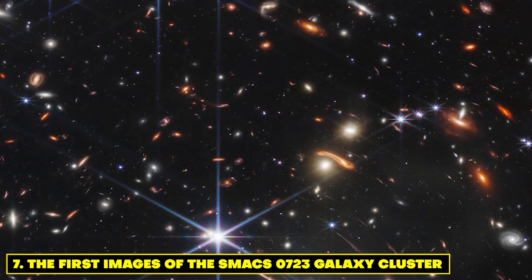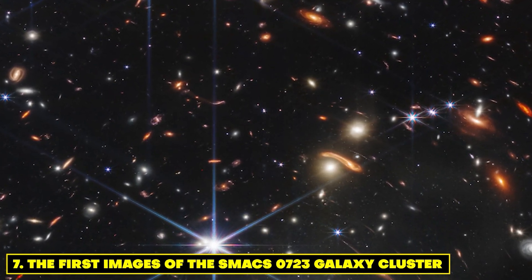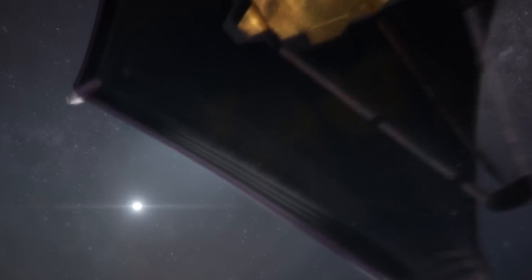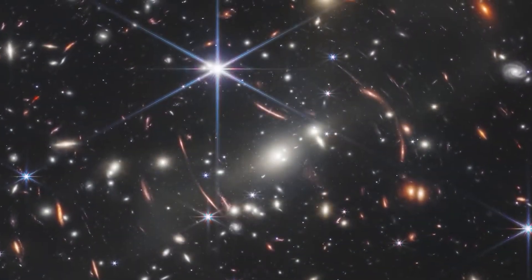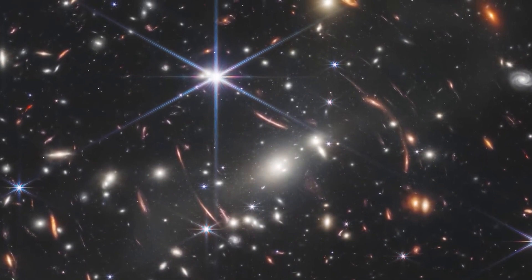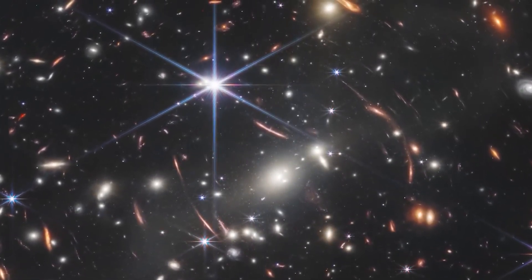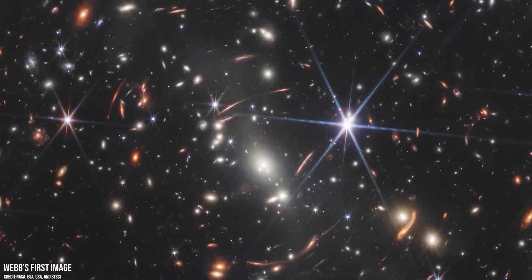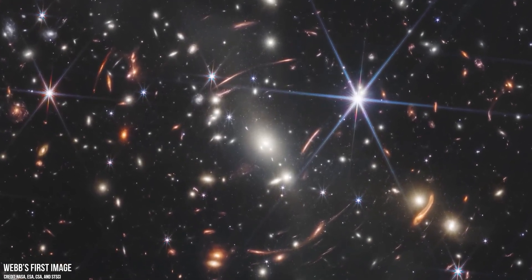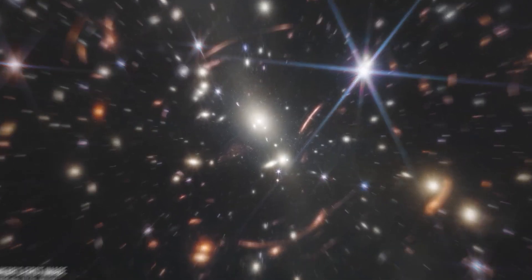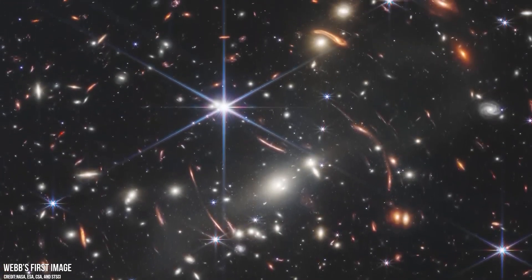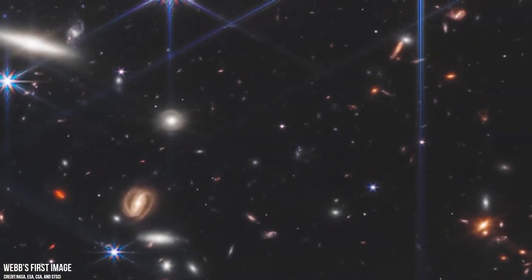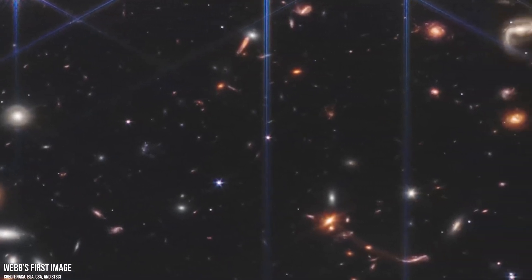Number 7. The First Images of the SMACS 0723 Galaxy Cluster. The James Webb Space Telescope unveils a breathtaking tapestry of images portraying the SMACS 0723 Galaxy Cluster, laying bare the intricate beauty of its constituent galaxies in unprecedented detail. In this cosmic revelation, we also witness the enchanting dance of gravitational lensing, a phenomenon born of the galaxy cluster's colossal mass, distorting and amplifying the light from distant galaxies. This captivating lensing effect becomes an indispensable instrument for astronomers, granting them the ability to peer into the concealed recesses of the universe, revealing galaxies that would otherwise remain veiled from our sight.